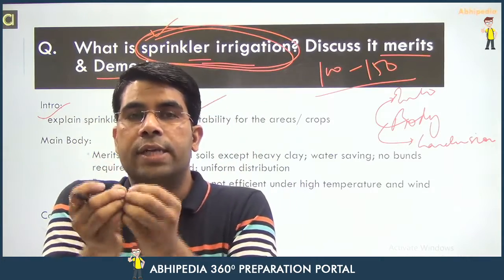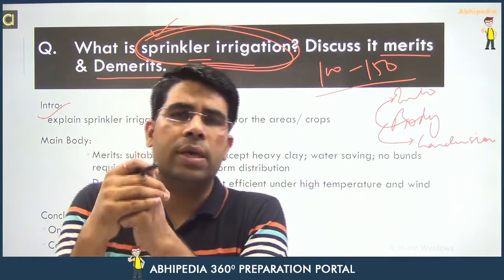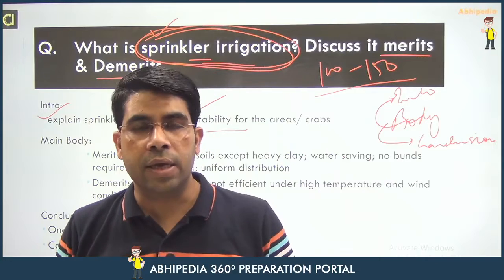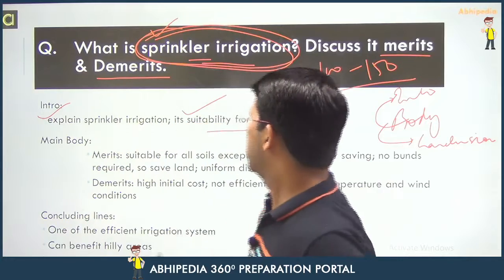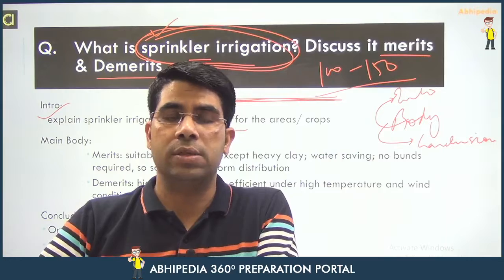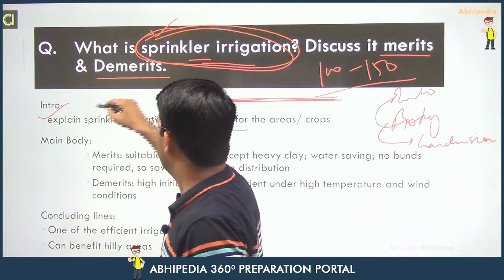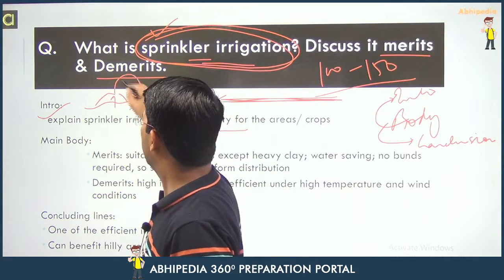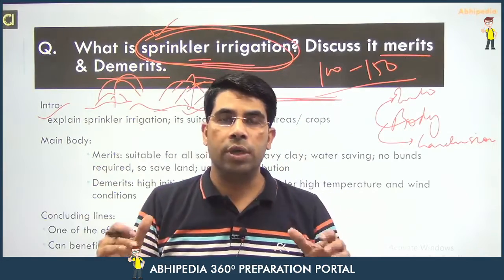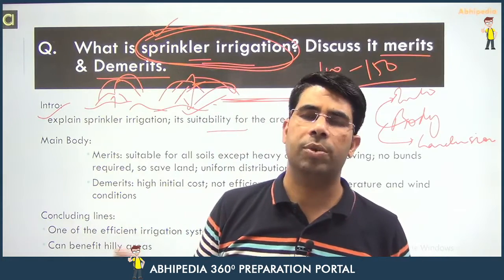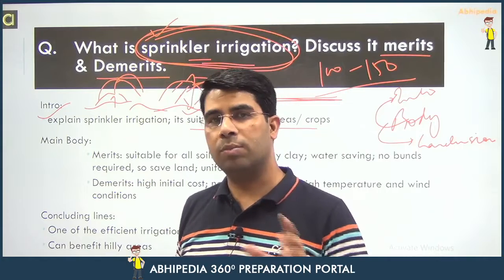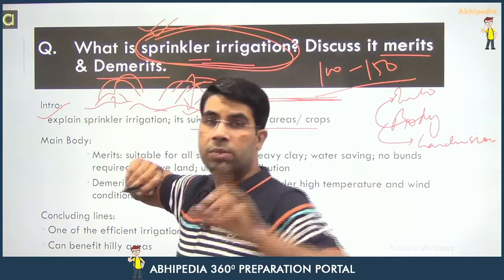In sprinkler irrigation, water is spread on the ground like rain — it resembles rainfall. It is suitable for almost every area, whether plain or not, because unlike canal irrigation where you need to make proper arrangements and prepare the soil, here even if your soil or area is somewhat uneven, a sprinkler can simulate rainfall. So in two lines you can explain it and also give an introduction.